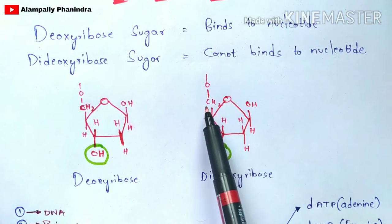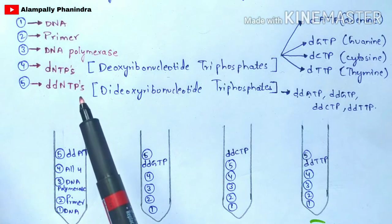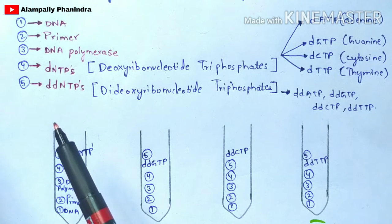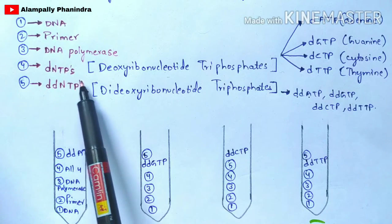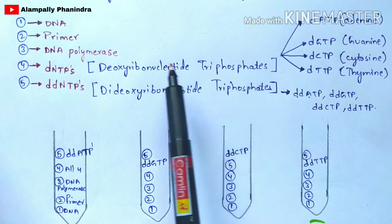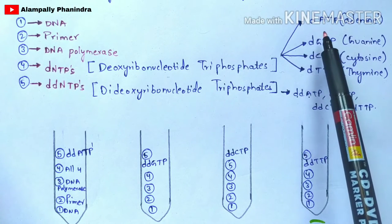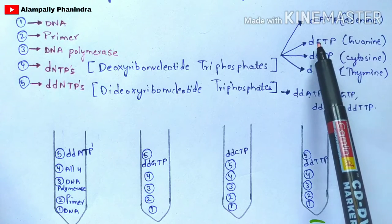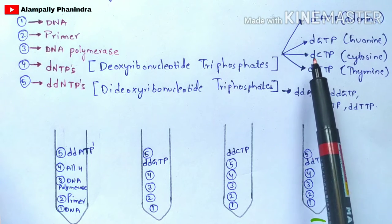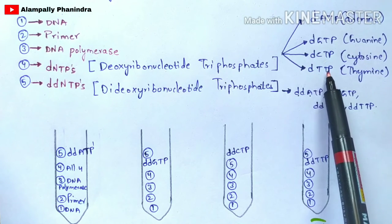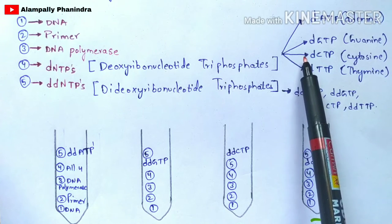Remember: deoxyribose sugar can bind to the nucleotide, but dideoxyribose sugar cannot. This point will be used further to understand Sanger DNA sequencing. Now, what are the ingredients required for this experiment? DNA, primer, DNA polymerase enzyme, and dNTPs — abbreviated as deoxyribonucleotide triphosphates. There are four types: dATP, dGTP, dCTP, and dTTP.